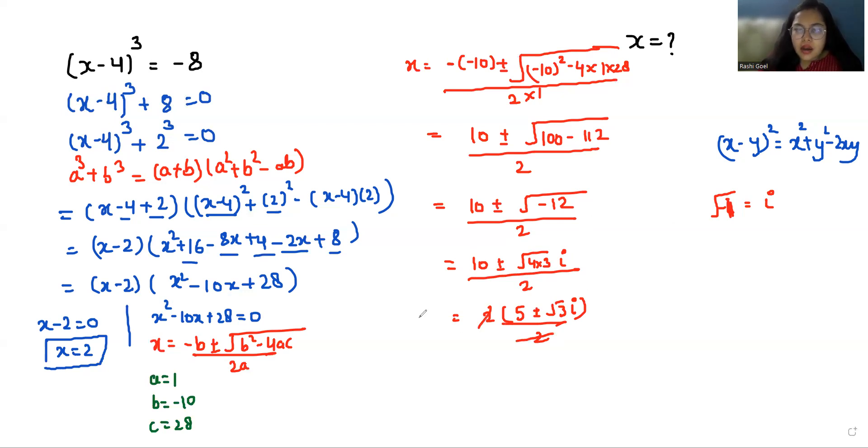So the values of x are: first is 2, second is 5 + √3i, and third is 5 - √3i.